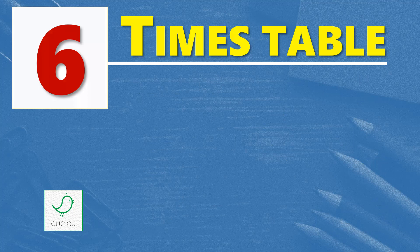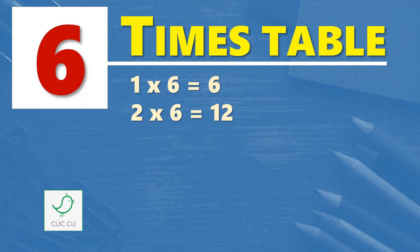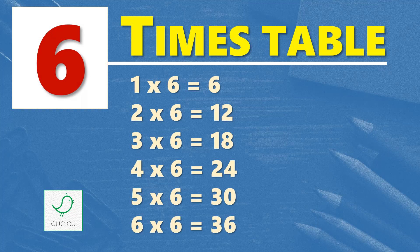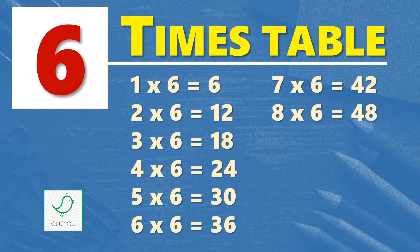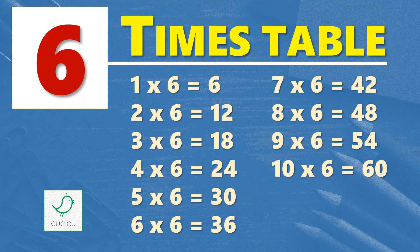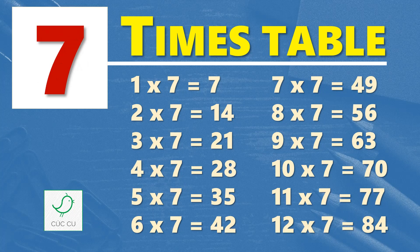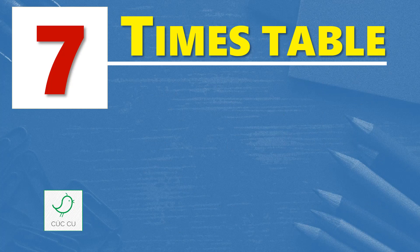Multiplication table of 6. 6 times table. 1 times 6 is 6, 2 times 6 is 12, 3 times 6 is 18, 4 times 6 is 24, 5 times 6 is 30, 6 times 6 is 36, 7 times 6 is 42, 8 times 6 is 48, 9 times 6 is 54, 10 times 6 is 60, 11 times 6 is 66, 12 times 6 is 72.